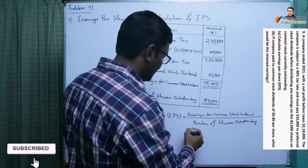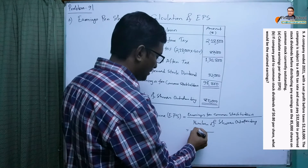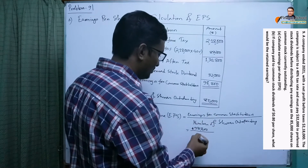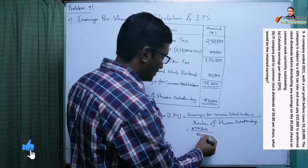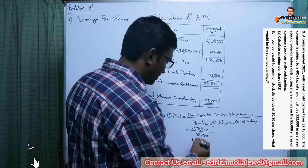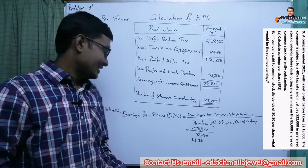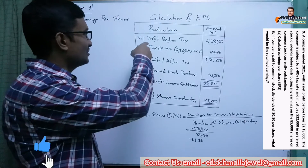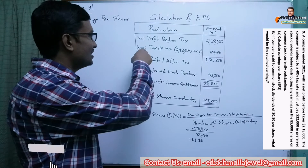Earnings for common stockholders is $98,800, divided by the number of shares outstanding which is 85,000. If we divide, we get $1.16, so $1.16 is considered as earnings per share or EPS.